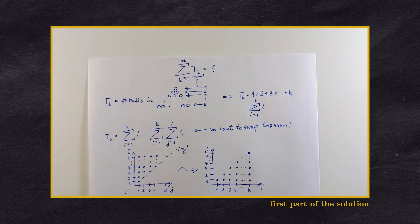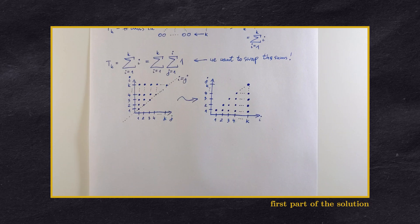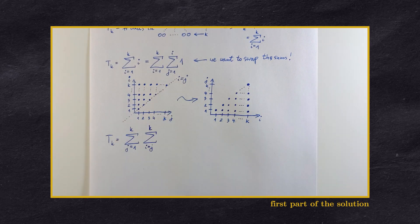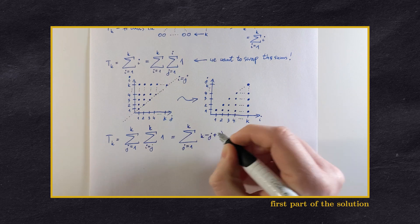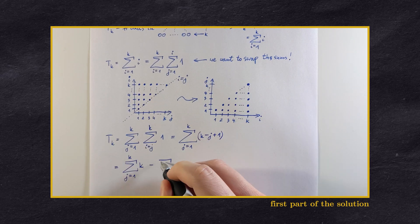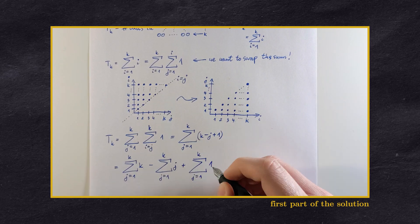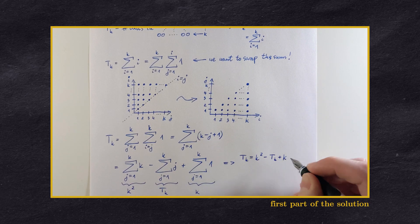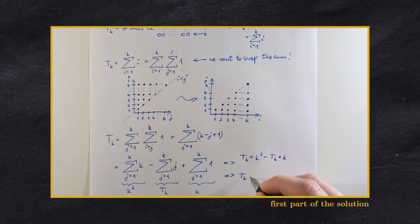It is now easy to see that our double sum is equal to this double sum. After some simple calculations, splitting the sum into three sums, we arrive at this equality, which then implies the formula for the tk.